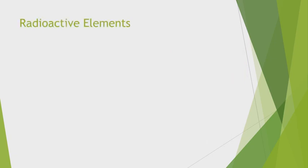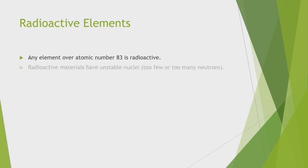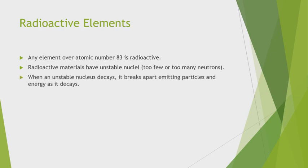Radioactive elements: any element with atomic number above 83 is radioactive, meaning the number of electrons or protons is above 83. Radioactive materials have unstable nuclei — they contain too few or too many neutrons. When an unstable nucleus decays, it breaks apart, emitting particles and energy.